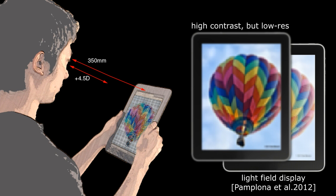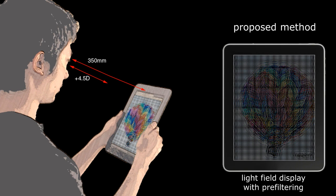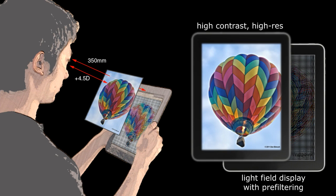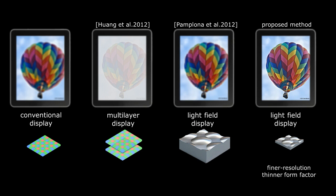Due to spatial angular trade-off of the hardware, we have developed a pre-filtered light field display, which enables the received image to have both high resolution and high contrast. We use a finer lens LED array and have a thinner form factor than the prior light field solution.